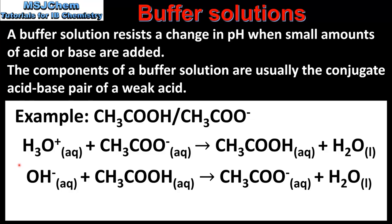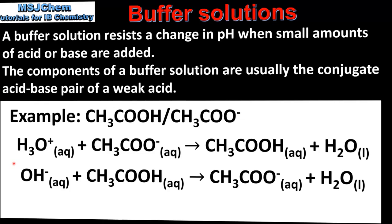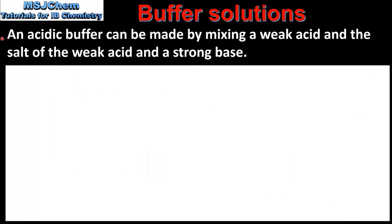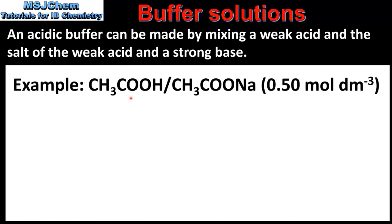Next we look at the different ways to make a buffer solution. An acidic buffer can be made by mixing a weak acid and the salt of the weak acid and a strong base. An example is ethanoic acid and sodium ethanoate. Note that both solutions have the same concentration.